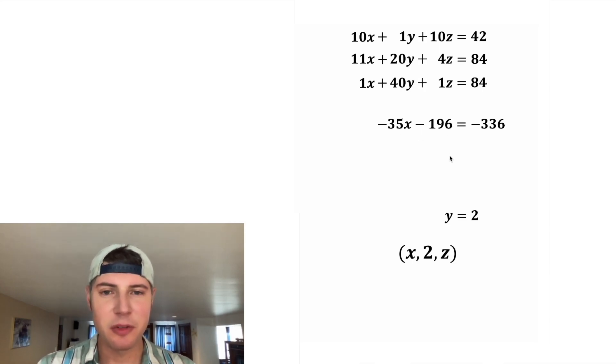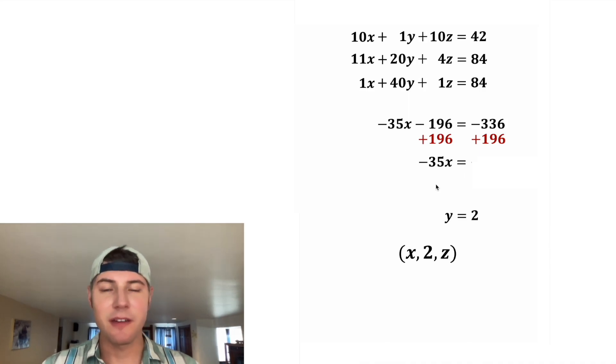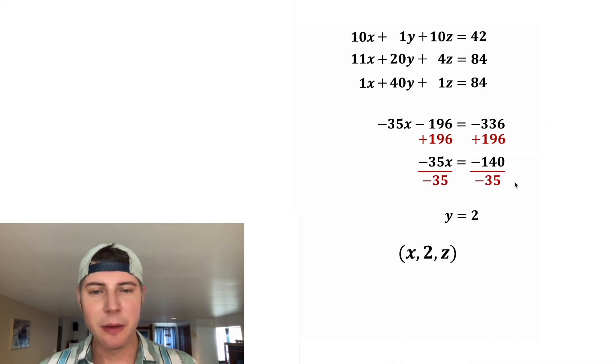98 times 2 will give us 196. And then we can add 196 to both sides. On the left-hand side, these cancel, so we just have negative 35x. Now on the right-hand side, negative 336 plus 196 is negative 140. We can divide both sides by negative 35, and we get x is equal to 4. And so we can update this x to be 4.